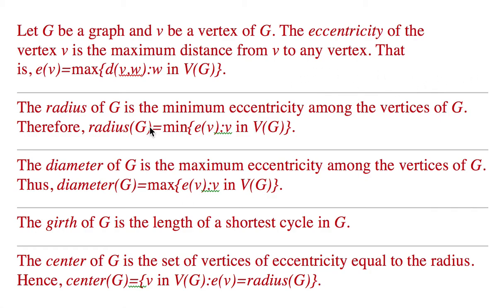We take the minimum of those eccentricities. That minimum is the radius of the graph.